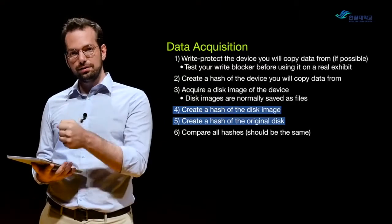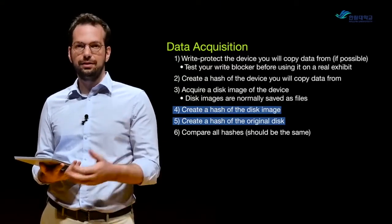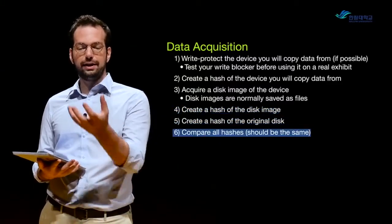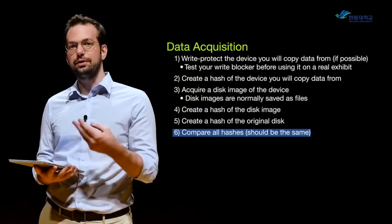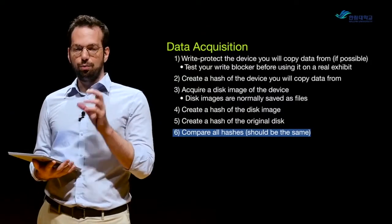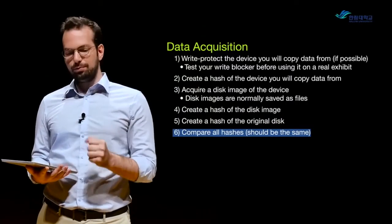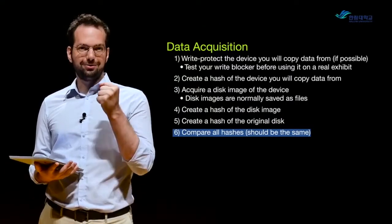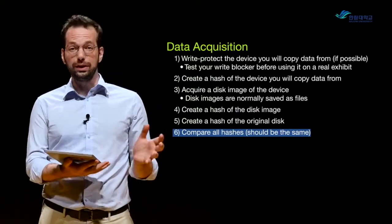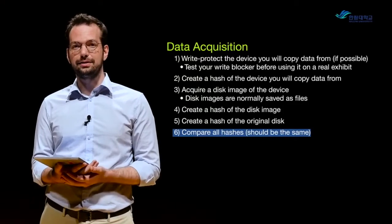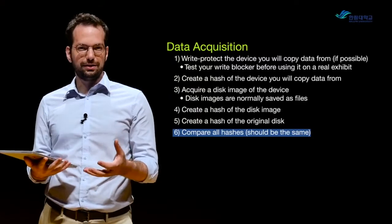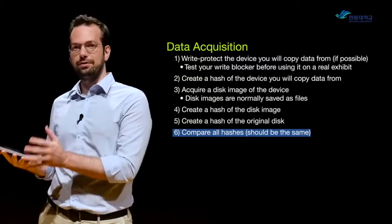We also make another hash of the original disk to make sure we didn't make any modifications. Once we've done that, we have a disk image and three hashes. Those hash values should all be the same. Once we have that, we know that we have a copy of the original data that has not been modified from when the suspect had access to that data.